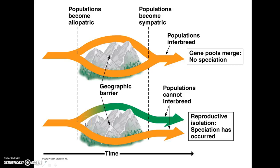In this lower case, we have the same geographic barrier, but when the populations become sympatric again, you still have independent trajectories of these arrows. The populations cannot interbreed — this represents true speciation. Reproductive isolation has occurred, and even if those two species are in the same area both temporally and spatially, they're not going to be interbreeding. That represents when speciation has actually occurred.